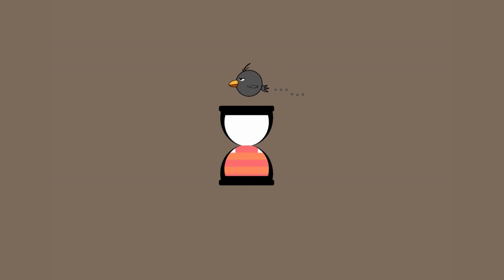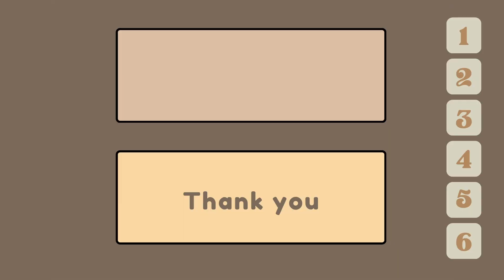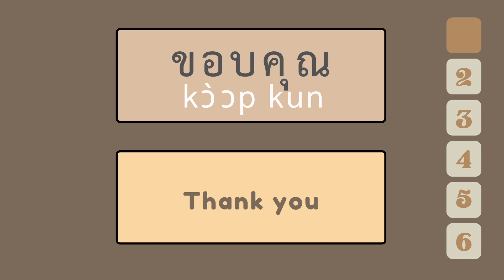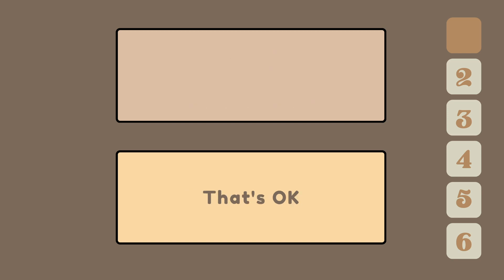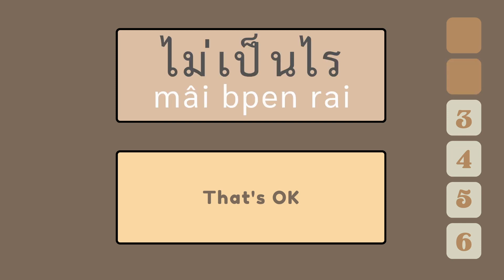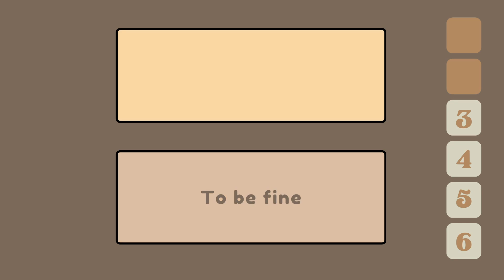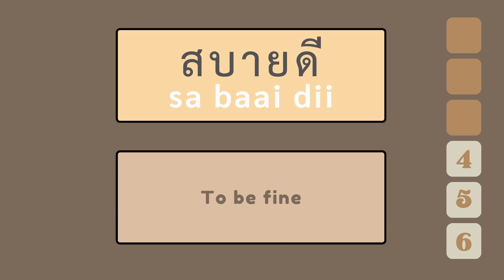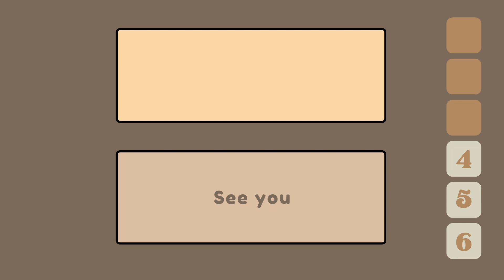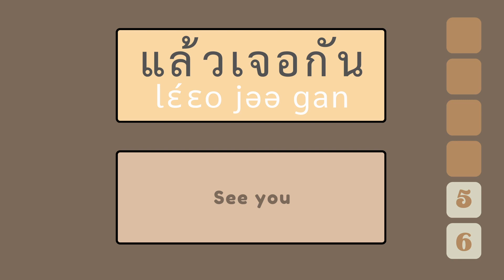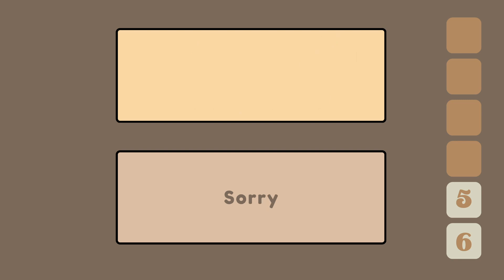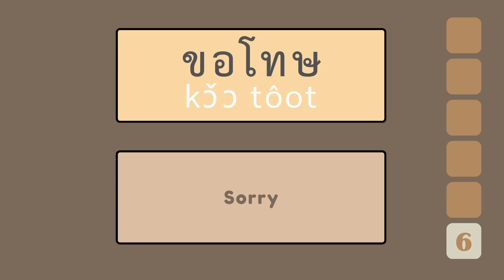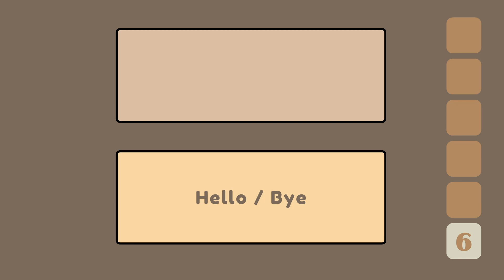Now, let's see if you remember how to say the words you have learned. How do you say thank you? — ขอบคุณ. How do you say that's okay? — ไม่เป็นไร. How do you say to be fine? — สบายดี. How do you say see you? — แล้วเจอกัน. How do you say sorry? — ขอโทษ. How do you say hello, bye? — สวัสดี.